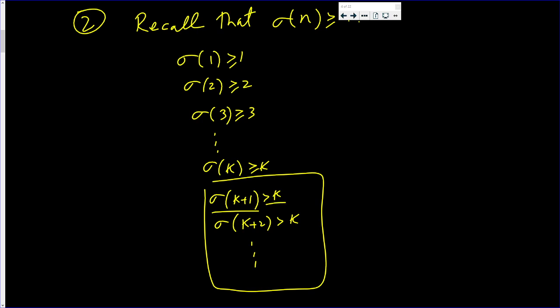Alright, so they can't equal k. Sigma of k plus 1 couldn't equal k. Sigma of k plus 2 couldn't equal k. Now in these cases, it is possible that sigma of 1 couldn't equal k, sigma of 2 couldn't equal k, sigma of 3 couldn't equal k, sigma of k couldn't equal k. Well, even if they all equal k, there is only finitely many. There is k of them.